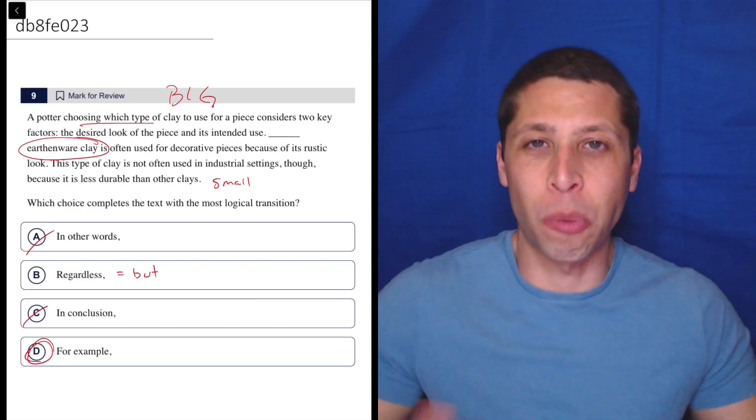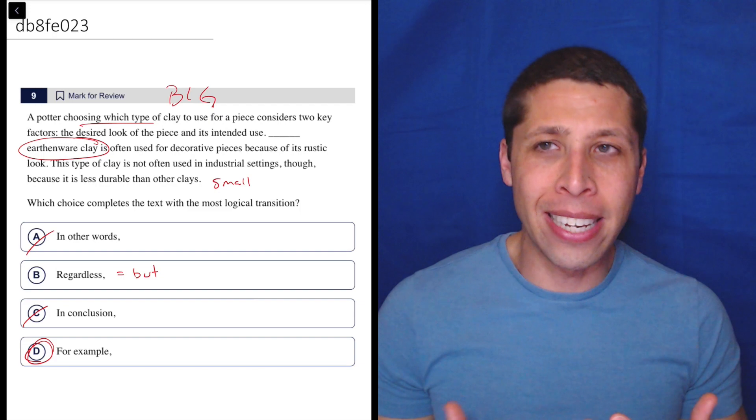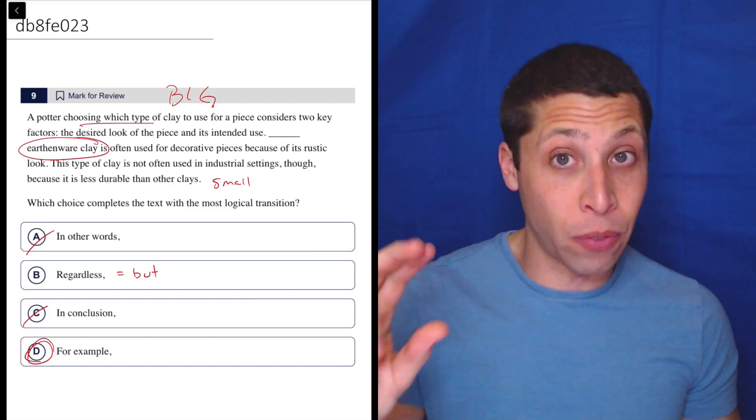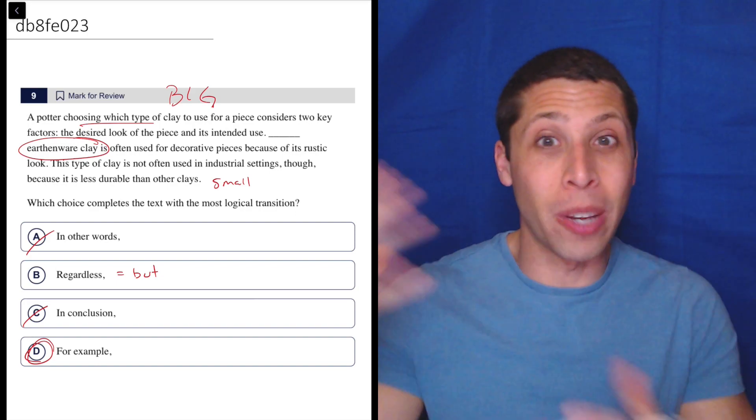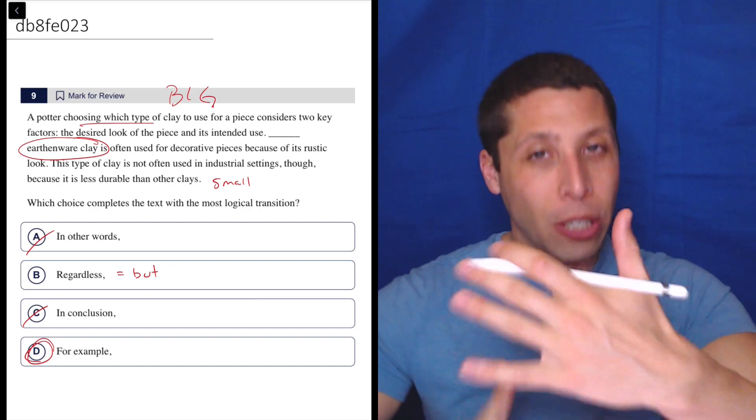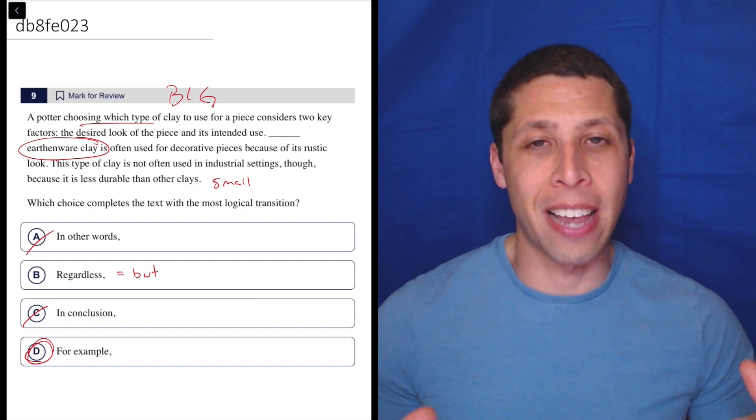It's an example. It's not a conclusion. We're not summarizing some big idea. It would be different maybe if this first sentence were actually the last sentence—then maybe that's a conclusion. We have our example to start and then we're concluding by summarizing what that example means for us, but that's not what's happening here.